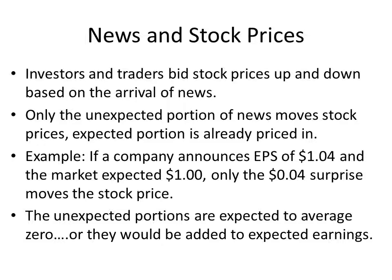Let's do an example. If a company announces earnings per share of $1.04 and the market expected $1, only the $0.04 surprise moves the stock price. The market already had priced in the expected $1 announcement of earnings. Now, the unexpected portions are expected to average zero. Why? If they didn't average zero, they would be added to the expected earnings.